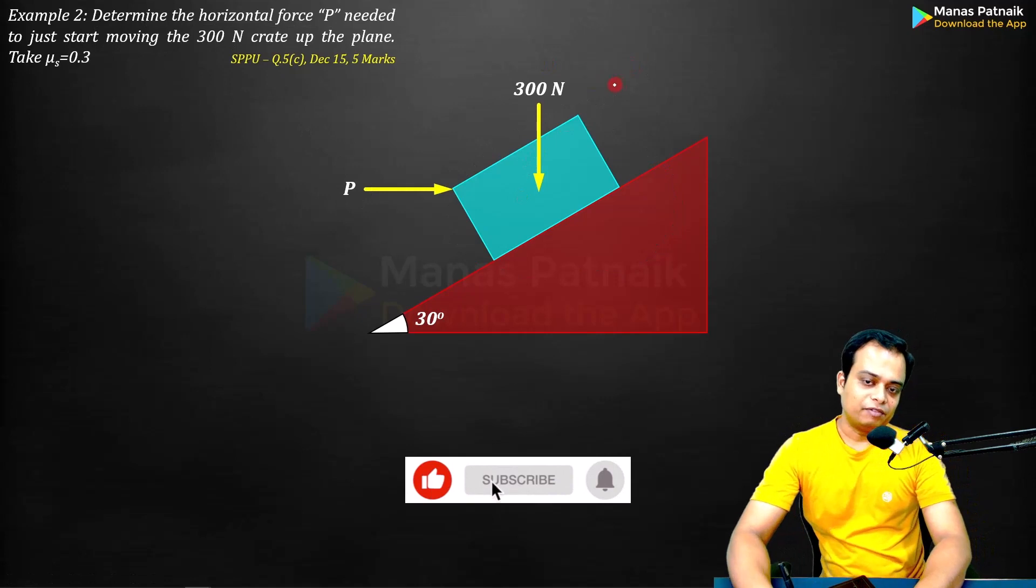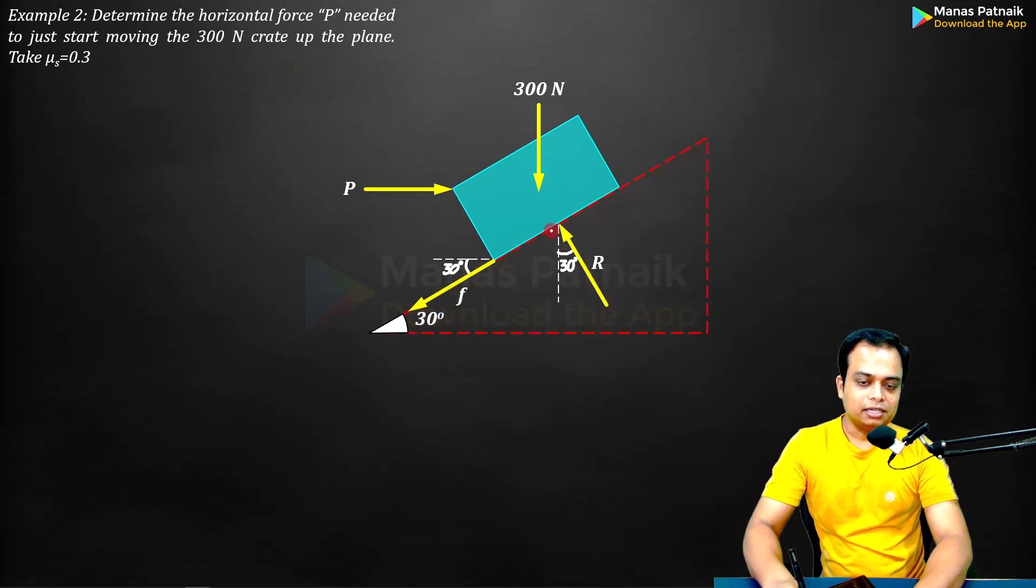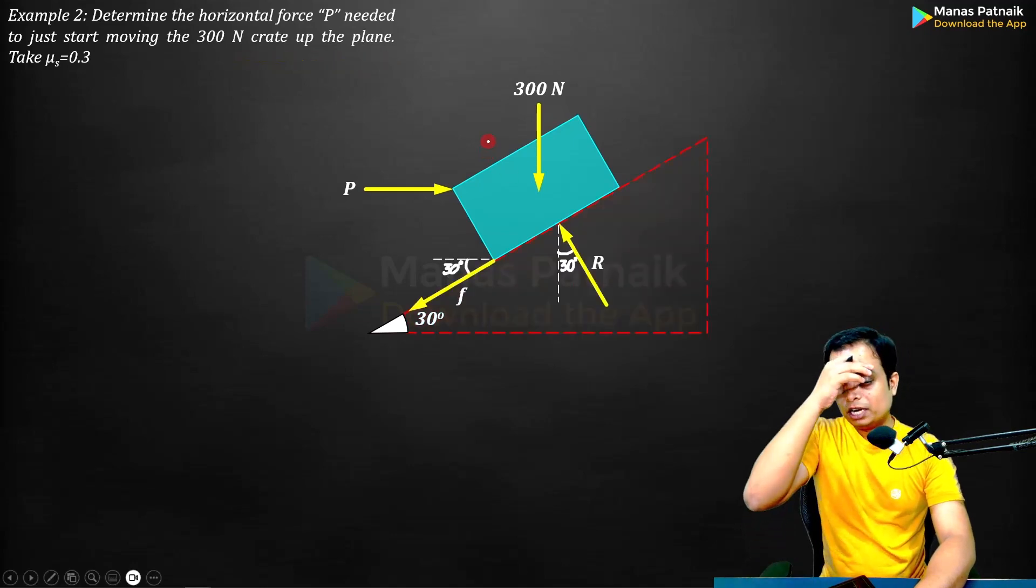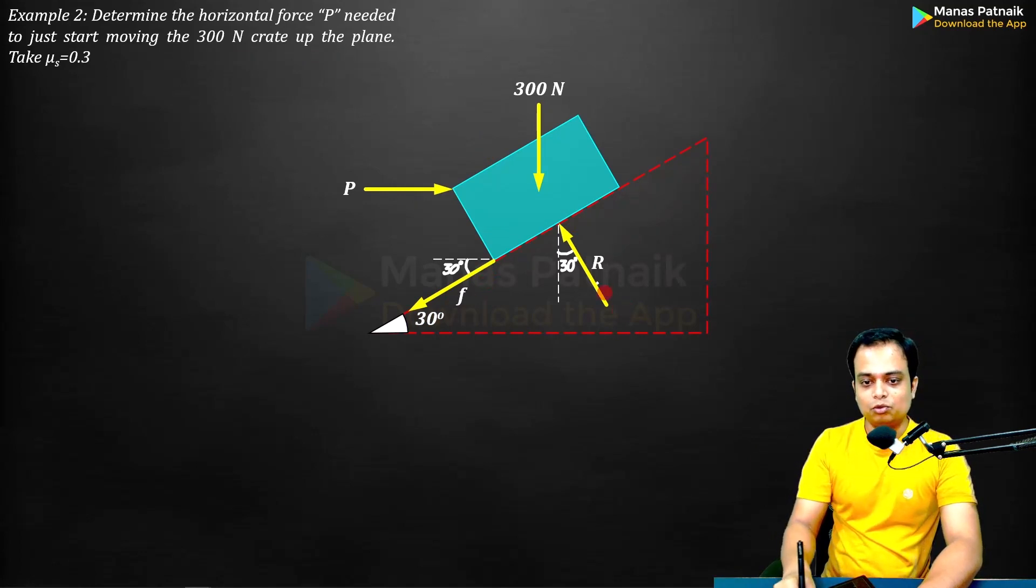The first thing is if it starts moving in the upper direction, then the friction obviously will be in the downward direction. And that's the normal reaction from the inclined plane to the block. The next thing to do is to resolve these two forces into the x and y components.